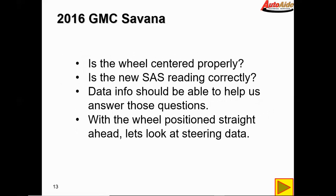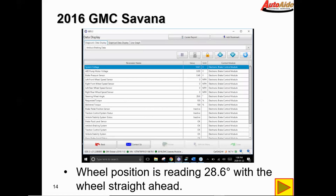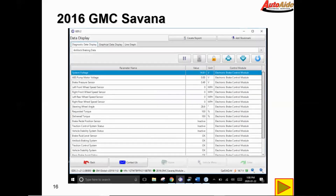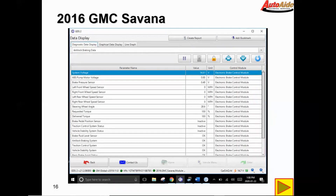We've got a couple of questions: Is the wheel centered properly? Is the new steering angle sensor reading correctly? Taking a look at data should help answer those questions. With the wheel positioned straight ahead, we have a reading of 28.6 degrees — that doesn't look right. Getting the steering wheel angle PID to read 0 required turning the wheel nearly a quarter turn to the left. With the wheel at straight ahead it reads 28.6 degrees, and as I turn the wheel to the left it slowly comes down to around zero, then back to center reads 26.8 degrees.